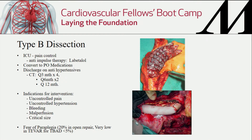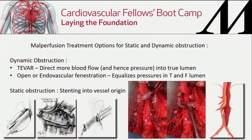The risk of paraplegia historically for type B dissection with open repair was very high — around 20% — because you're sewing into tissue paper. Open surgical mortality was 30 to 50% for acute type Bs. TEVAR mortality is very low, somewhere less than 5%. The old-fashioned fenestration technique — opening the aorta after clamping, cutting out the septum, tacking vessel origins back, and reshaping the aorta over a dilator — actually produced good late outcomes with low degeneration in Mel Williams' series at Hopkins.